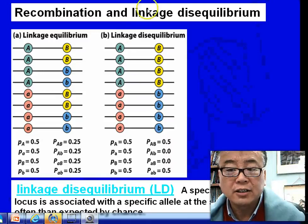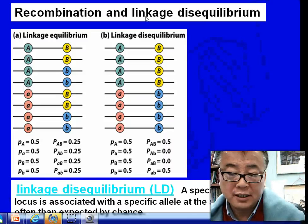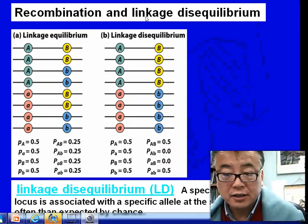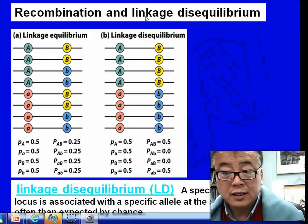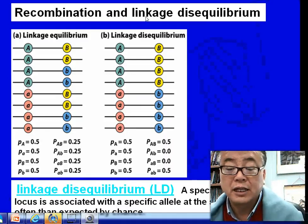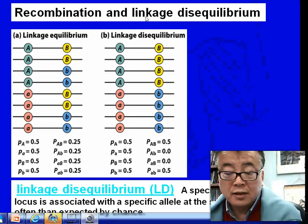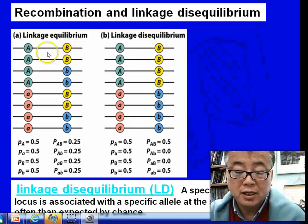Linkage is not a new concept. We learned this before as we studied gene mapping, when Morgan and his student used recombinant frequency to measure the distance between alleles, only applied to those alleles in the same linkage group. So in the linkage equilibrium concept,